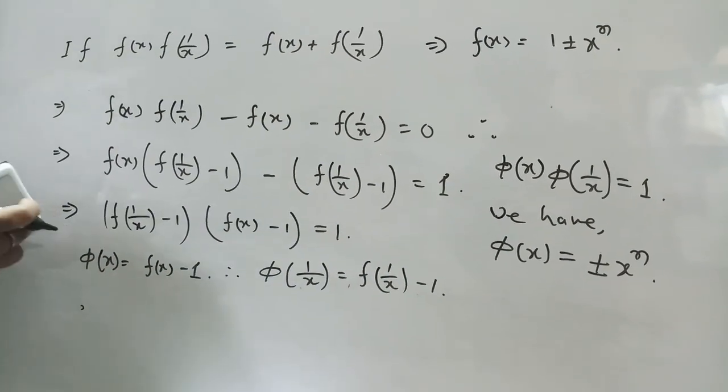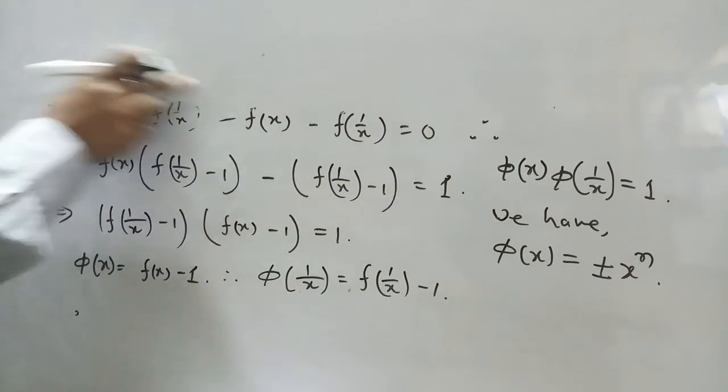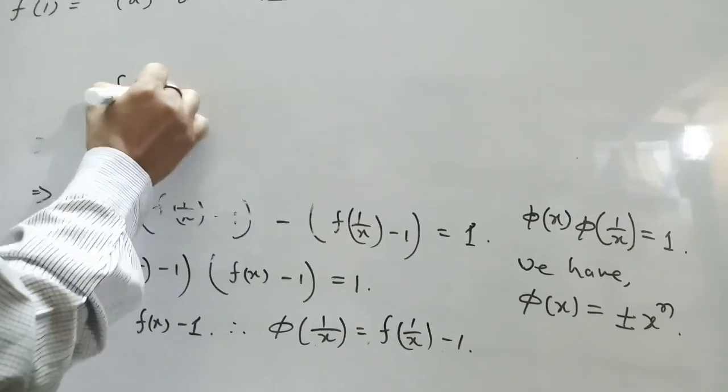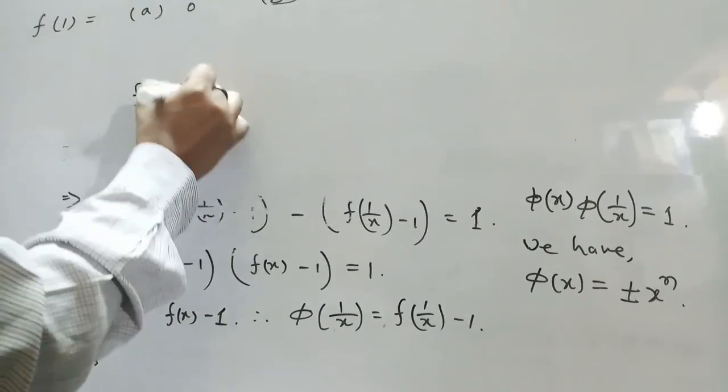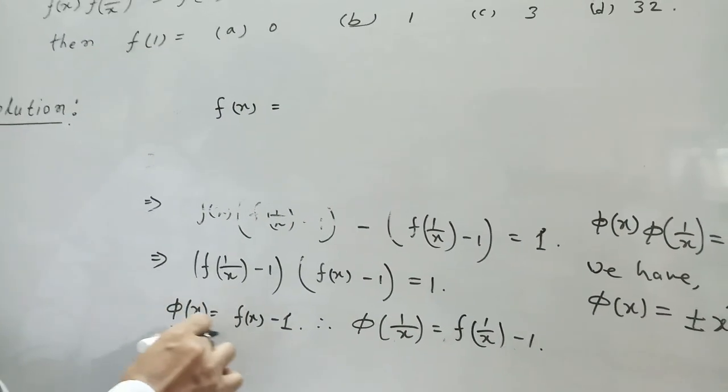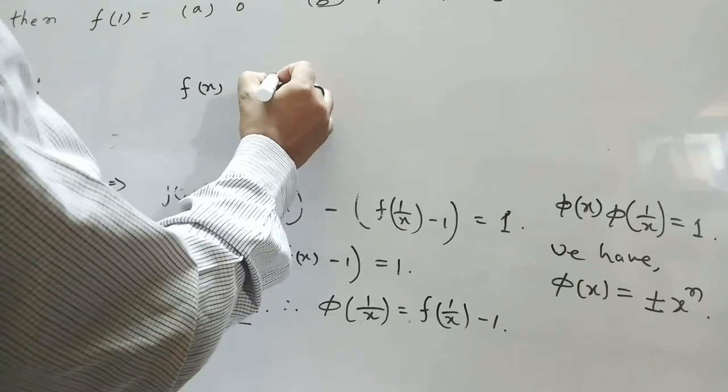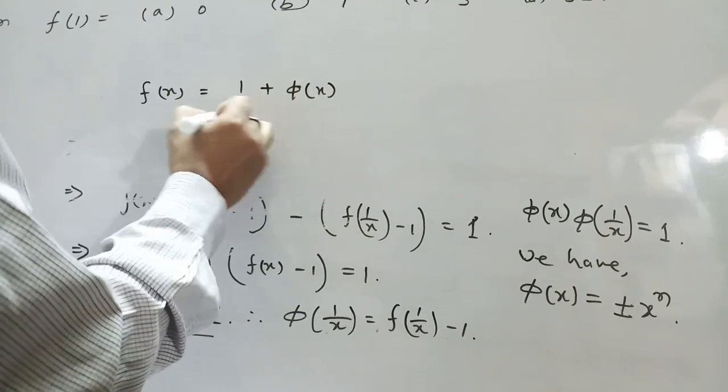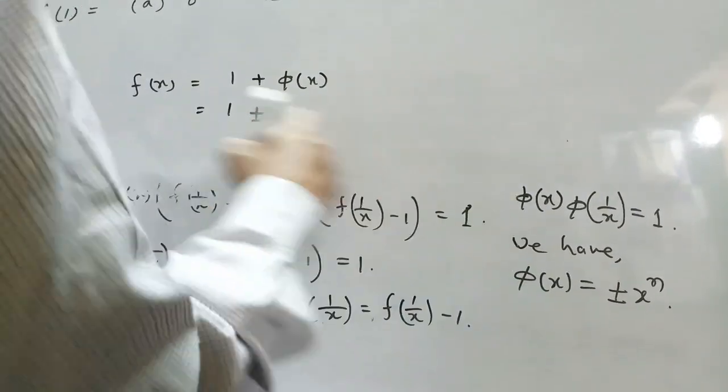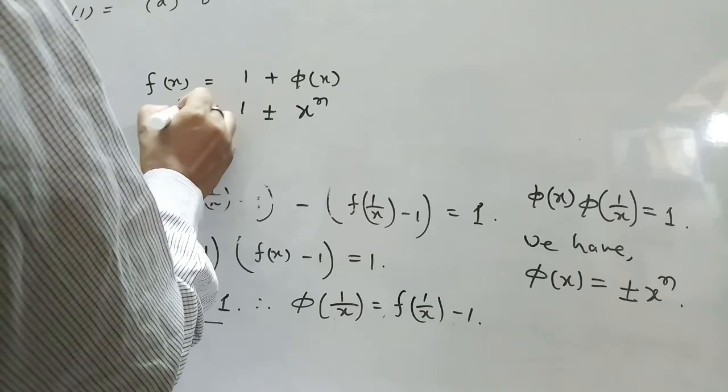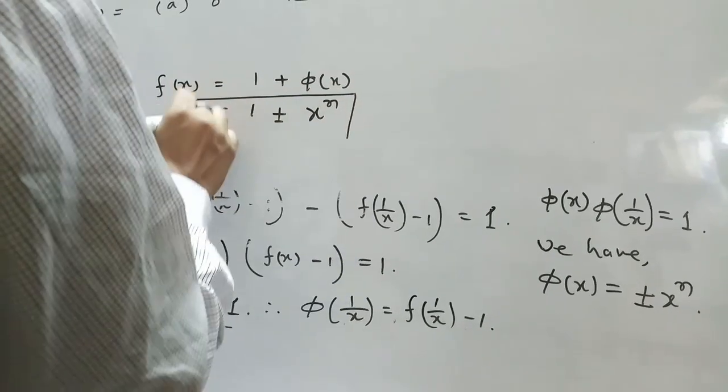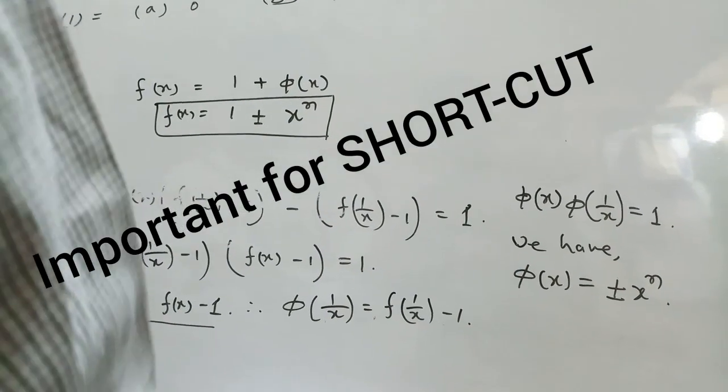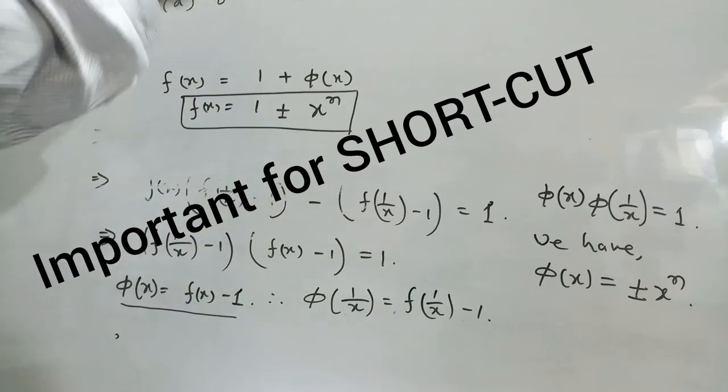Therefore, value of f(x) is from this, f(x) is 1 plus φ(x) equal to 1 plus minus, putting the value of φ(x) here, x to the power n. This is the value. In this way, we can find the function f(x) from this type of relation.